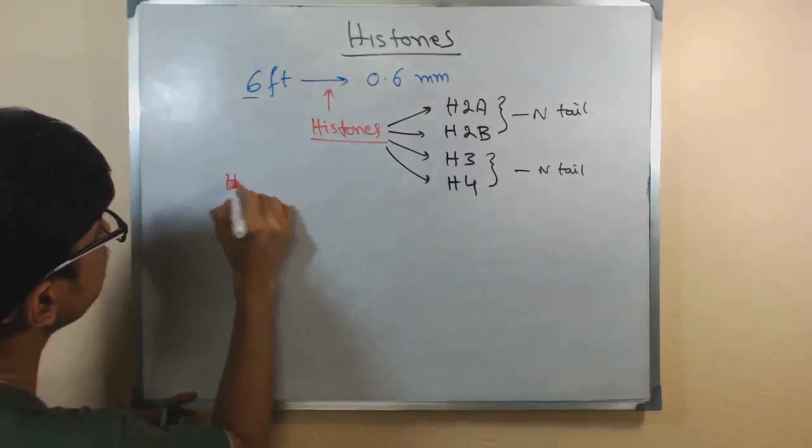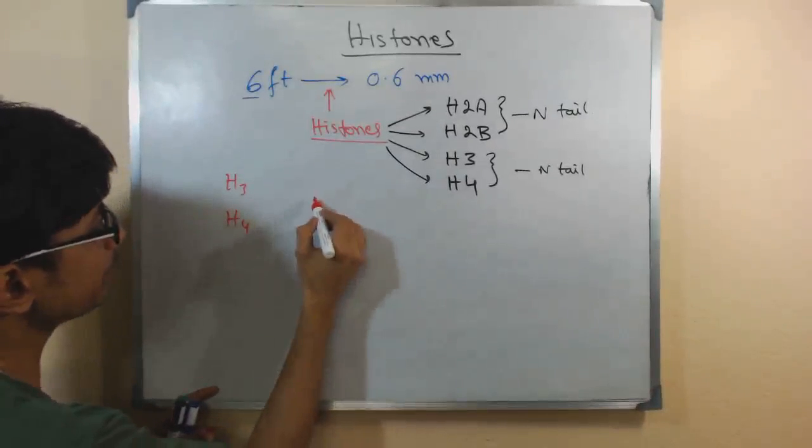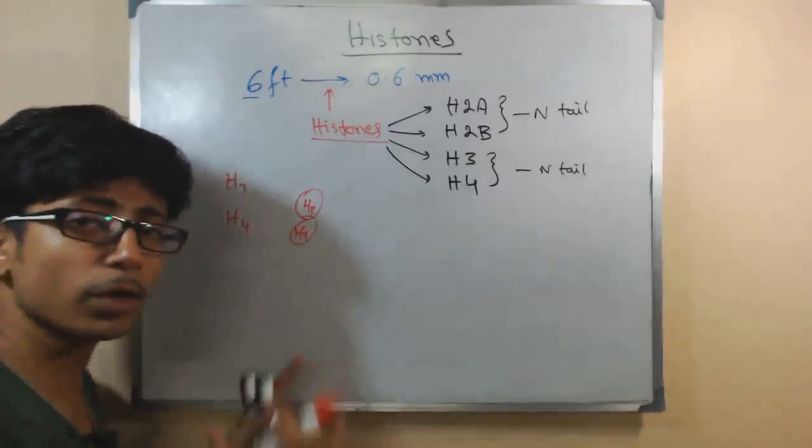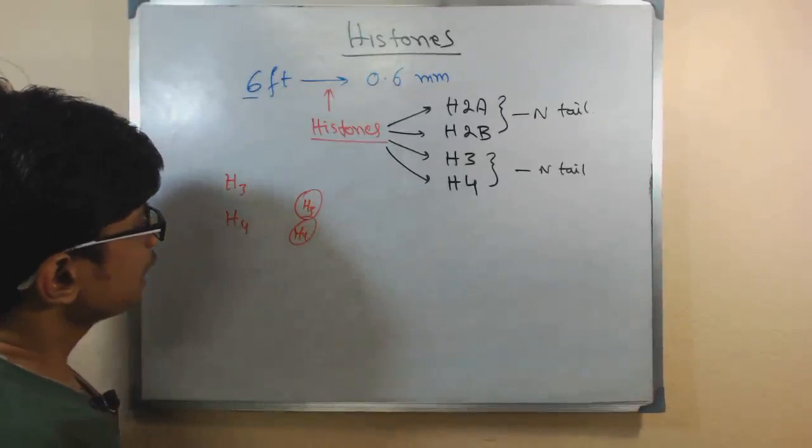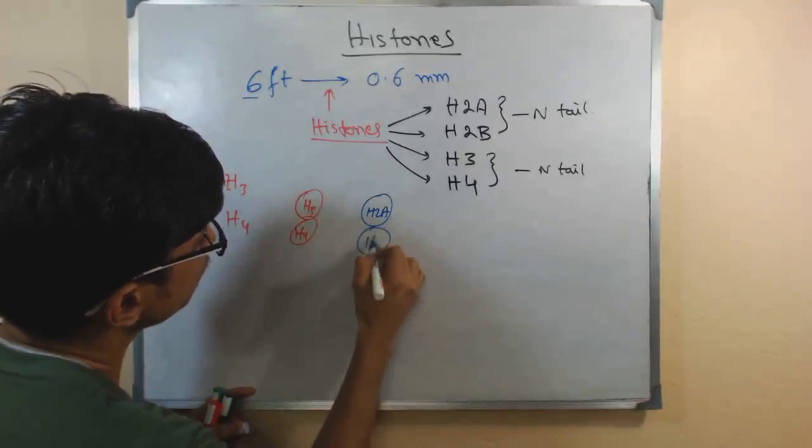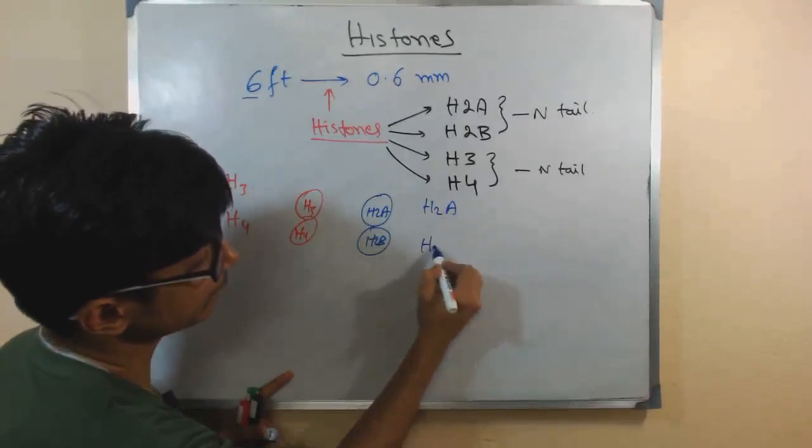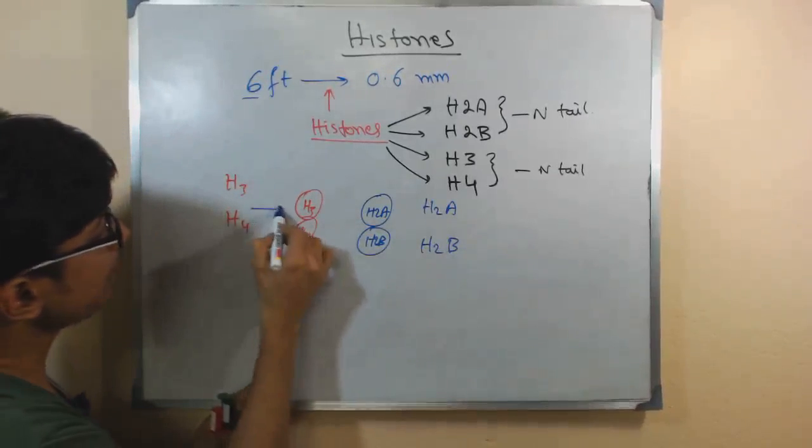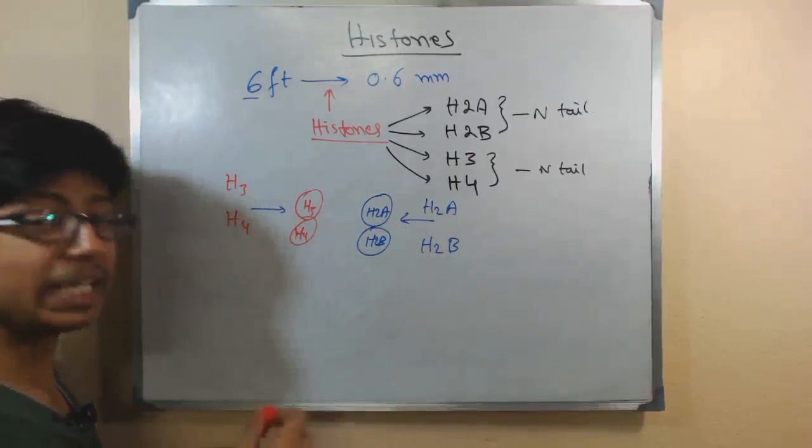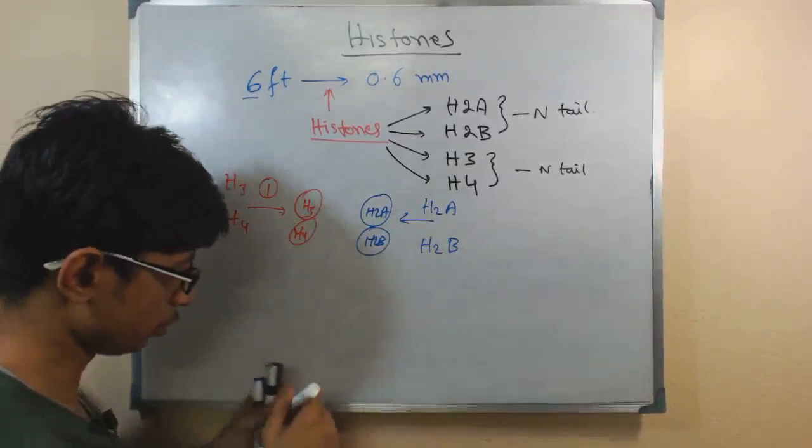They are arranged in a very simple manner. Let's say H3 and H4, they arrange first to form a dimer. Then what happens is that H2A and H2B form another dimer separately. Remember the scheme. This happens and this happens separately. So if I draw the event marking strategy, this is event number 1, this is event number 2.